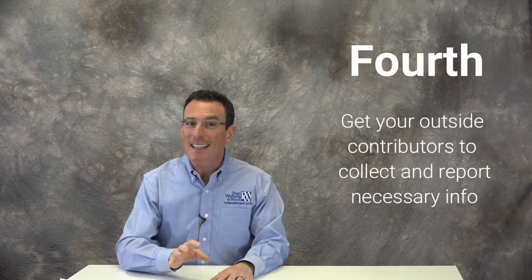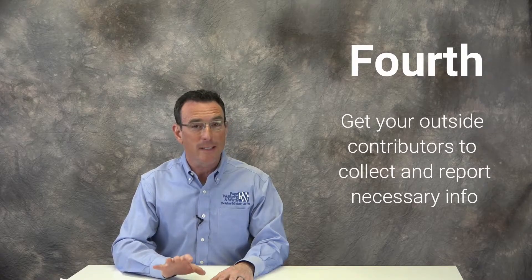Fourth, start working with your outside contributors to get them to collect and report the information that you're going to need. For example, if your ambulance service is part of a hospital, municipal government, a larger corporation or corporate entity, or even if you're a nonprofit that gets fuel or staff benefits or rent for your headquarters paid by a local government agency, those costs need to be reported. So you're going to have to work with those outside or parent organizations to get the portion of those costs that they cover.